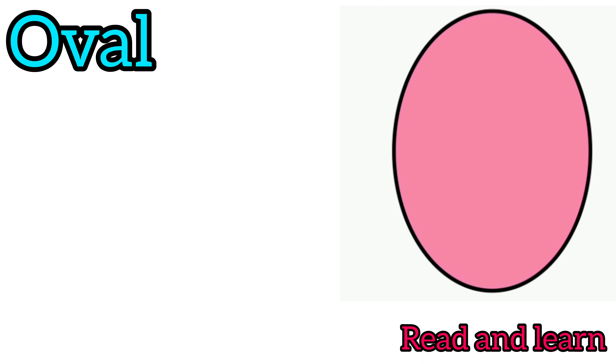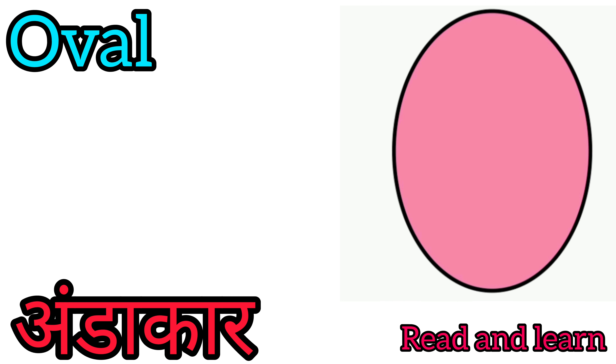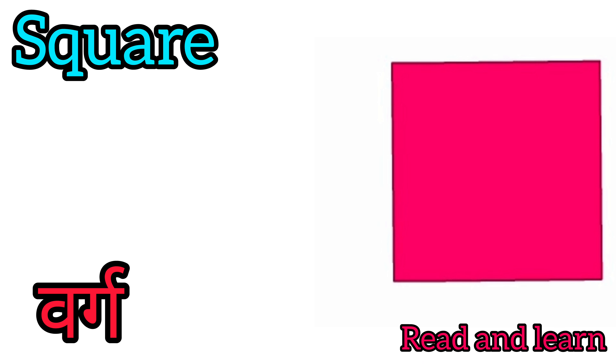Oval — oval means Andakar. Square — square means Virg.